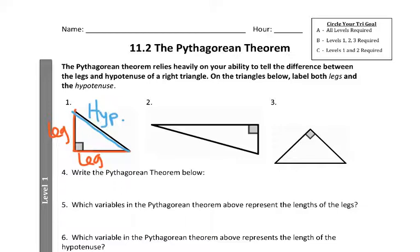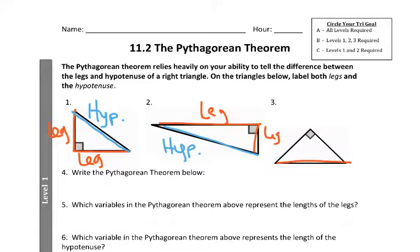I expect you to write that full word out. So the first three questions just ask us to label the legs. I'm tracing them in color so you can see them. Here are the two legs, because they meet at the right angle. And right there is the hypotenuse. Now, I was kind of trying to trick you. Most people want to call the bottom of a triangle the leg just because it's resting on the bottom, which is kind of a visual trick. But remember, by definition, the two legs are the ones that make the right angle. So label those legs and then go ahead and label the hypotenuse.